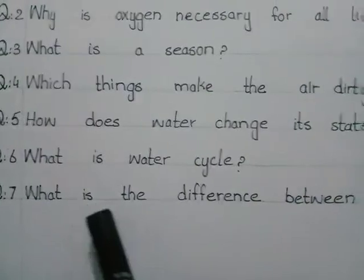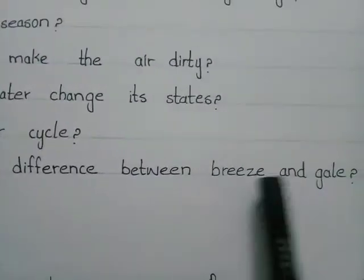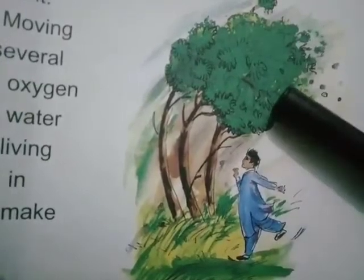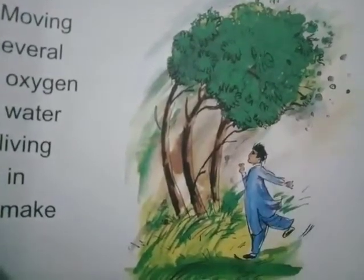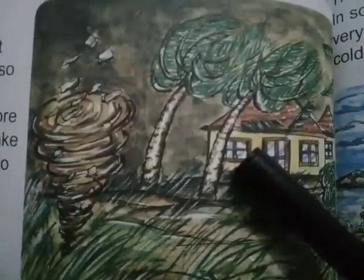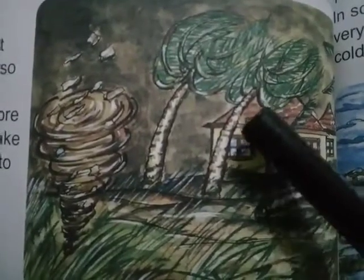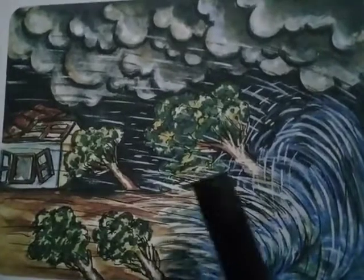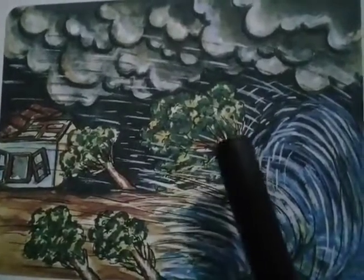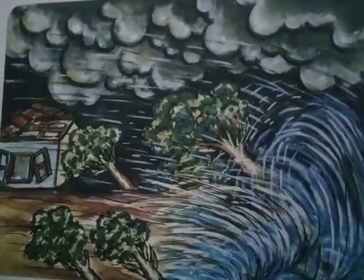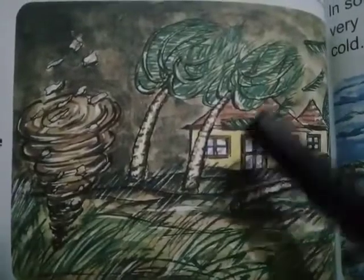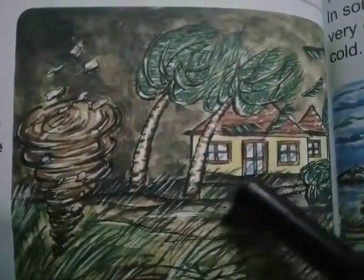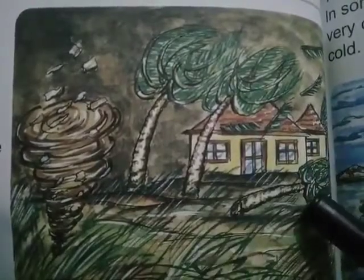Question number 7 is: what is the difference between a breeze and a gale? When the wind blows slowly, it is called a breeze. But when the wind blows very fast, it is called a gale. When a strong gale comes with rain or snow, it is called a storm. Strong gales can cause a lot of damage and can even uproot trees.